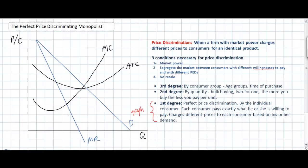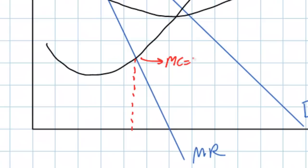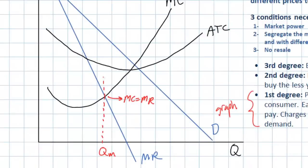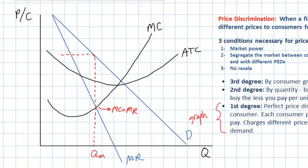Let's look at the graph and examine the price and quantity that a single-price monopolist would produce at to maximize profits. The MC equals MR point represents the monopolist's profit-maximizing quantity. Such a firm charges a price corresponding with the demand for its product at quantity QM, and the yellow rectangle represents the single-price monopolist's economic profit at that profit-maximizing quantity.